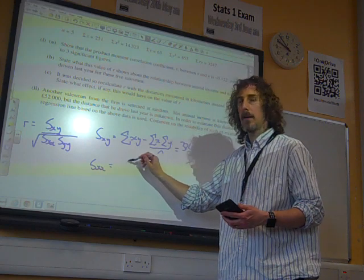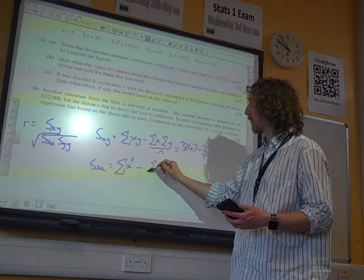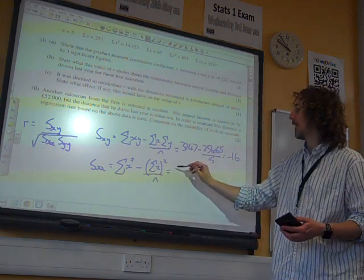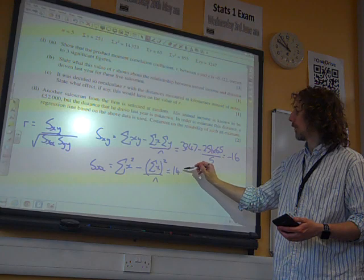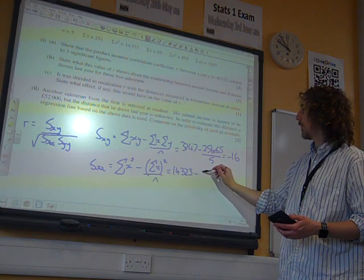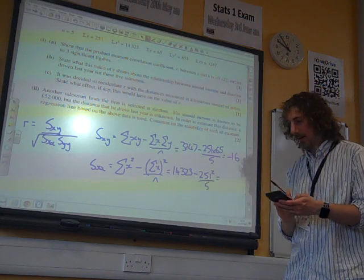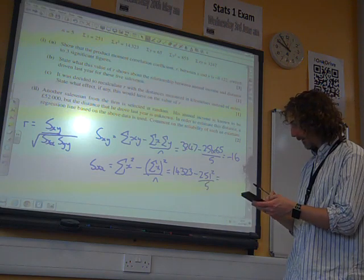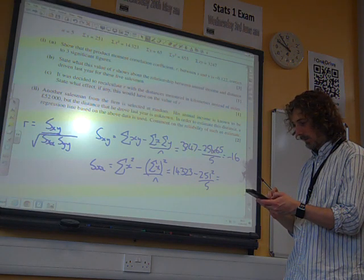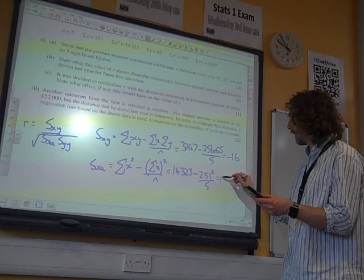SXX is sigma X squared minus sigma X when you square it over N. Look at the formula booklet for that. And we get 14323 minus 251 squared over 5. Stick that in the calculator. And we get 1722.8.